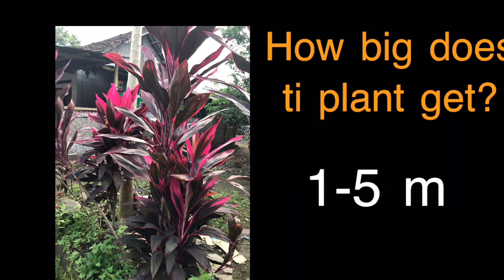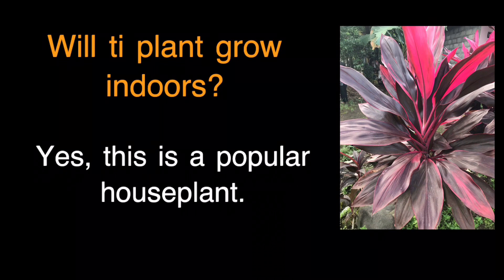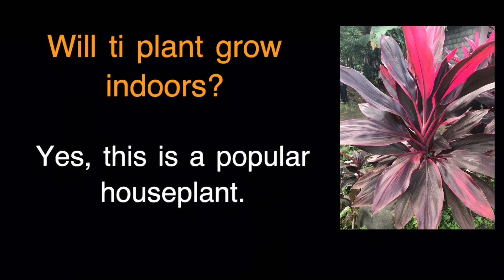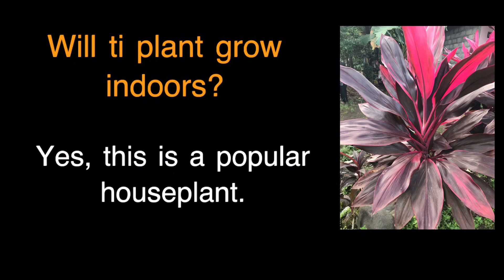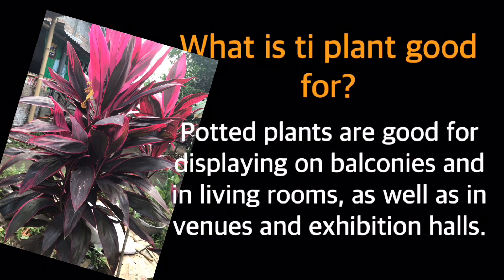How big does the Ti plant get? One to five meters. Will the Ti plant grow indoors? Yes, this is a popular house plant. Does the Ti plant bloom? The Ti plant produces small whitish or pink-colored flowers in its natural habitat, but it's very unlikely to bloom indoors. What is the Ti plant good for? Potted plants are good for displaying on balconies and in living rooms, as well as in venues and exhibition halls.